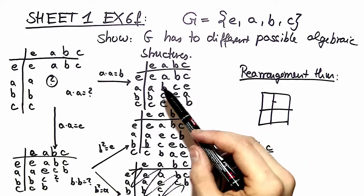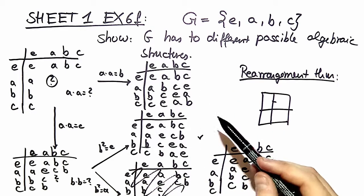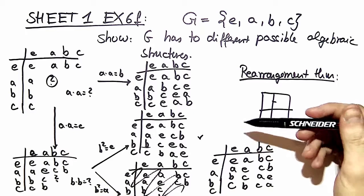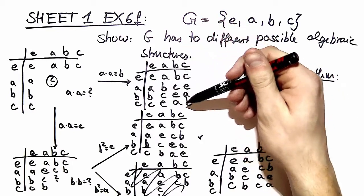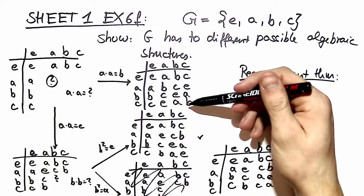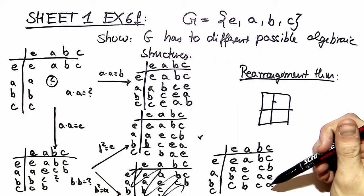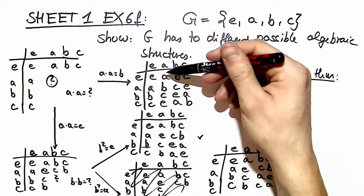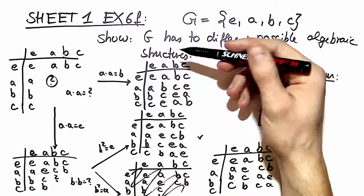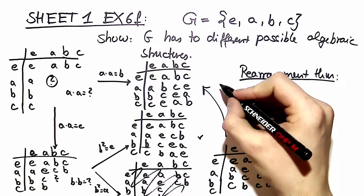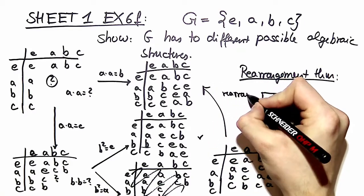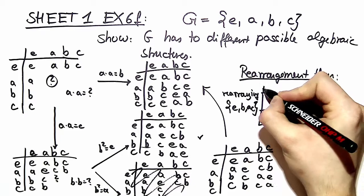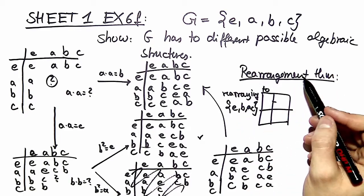From the point we have reached right now it seems as if we've got three different structures for multiplication table. Well but this is not true. We can see over here we have on the diagonal two different elements each repeated by two times. Here we have the same. So we can guess what happens if we rearrange those elements. Can we obtain that same multiplication table? And yes, that's true. We can come from here to here by rearranging to e, b, a and c. And we can do that because of the rearrangement theorem.